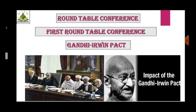First Round Table Conference: Ramsey MacDonald was the chairman. Representatives of England and India participated, including Dr. Babasaheb Ambedkar, Sir Tej Bahadur Sapru and Barrister Jinnah. Discussions covered topics such as responsible government at the central level and establishment of a federal state in India. Representatives of different political parties and rulers of the princely states participated. However, the Indian National Congress did not participate in it.